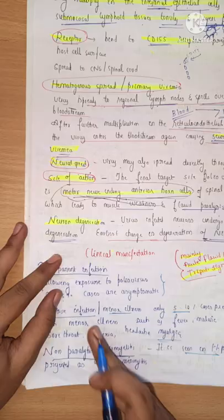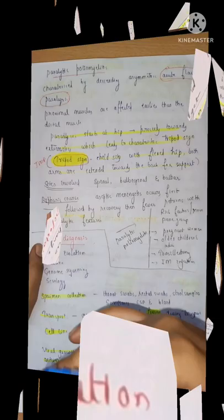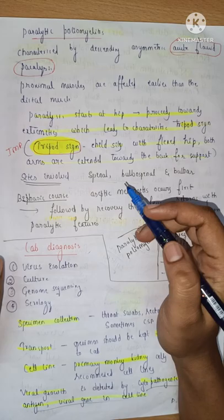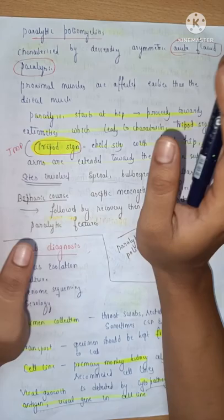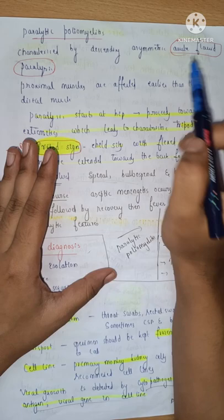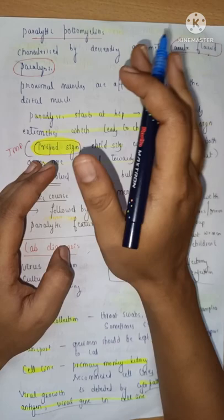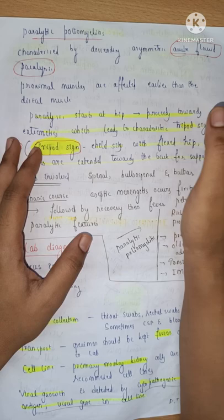The fourth phase: if the child suffering from this infection is not treated at the earliest, it will turn into paralytic poliomyelitis. This is the hazard — it will result in acute flaccid paralysis, mostly of the lower limbs. Proximal muscles are affected more easily than distal muscles.